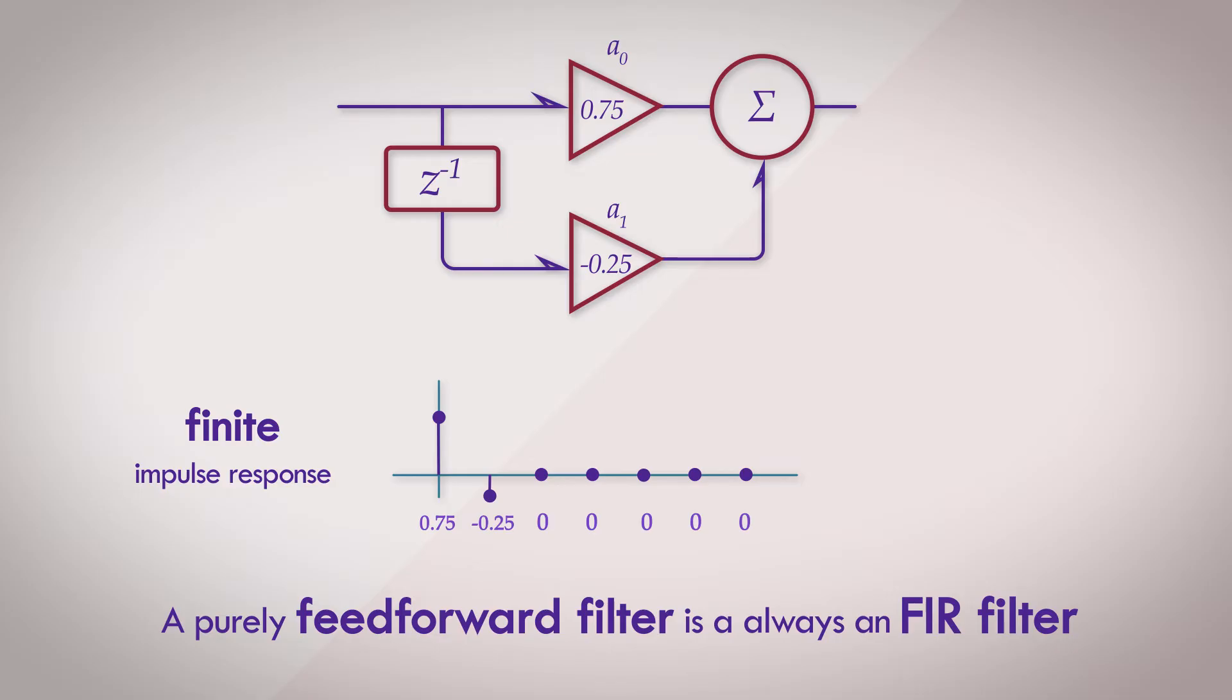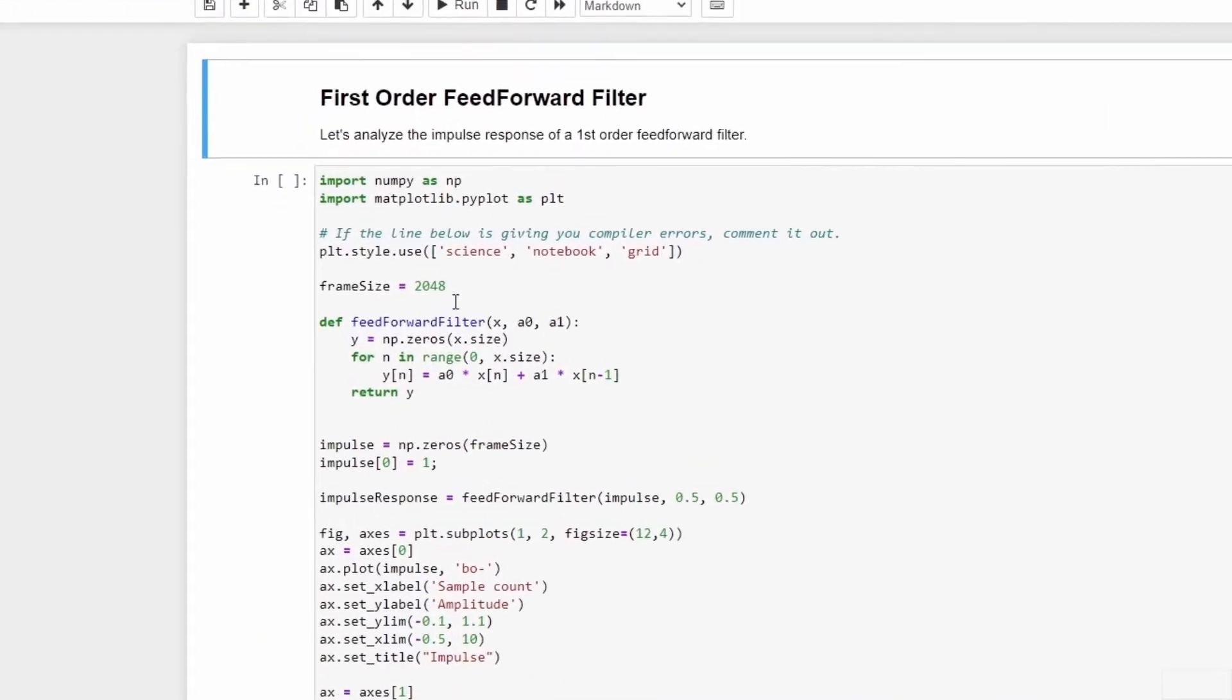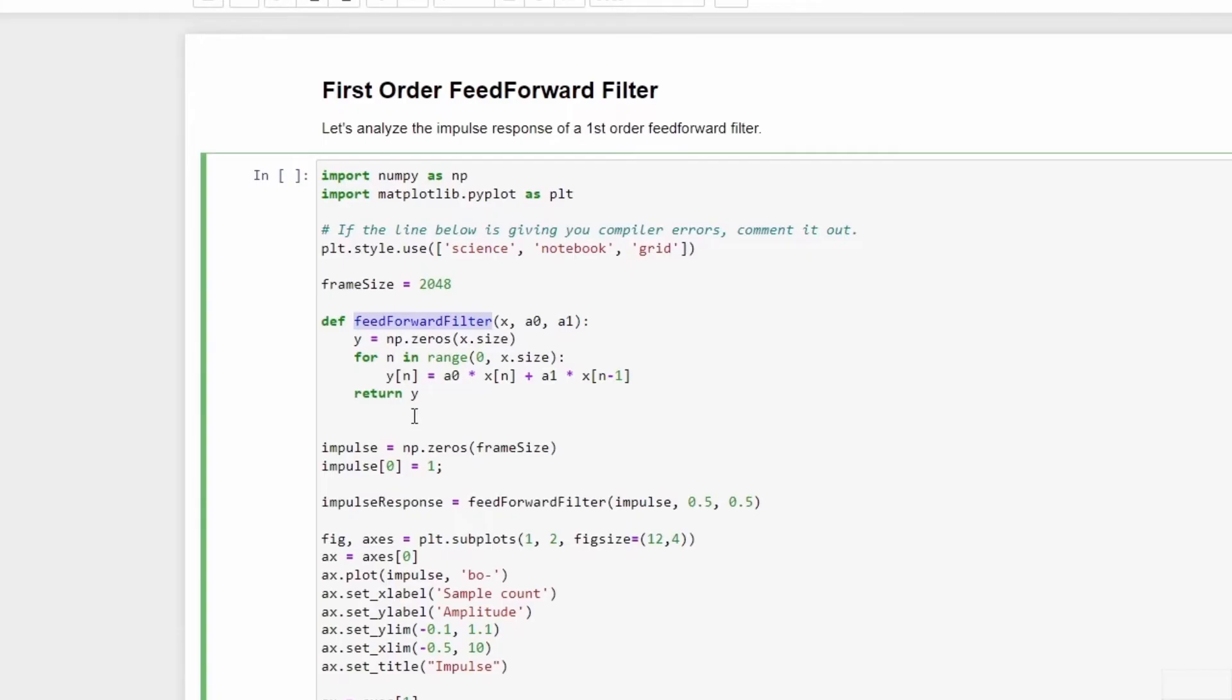Let's look at some programmatic examples of this. I'll run Python on Jupyter notebooks, and you can get the code online in the description below. I've got a feedforward filter function defined here, and this function accepts three arguments: X which is the input signal, and a0 and a1 which are the filter coefficients. The function basically loops through the entire range of the input and calculates the output by using this difference equation, and then returns the output.